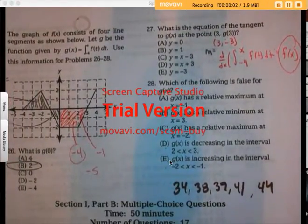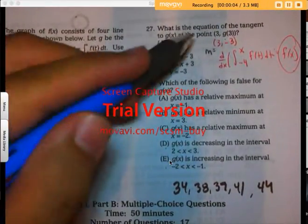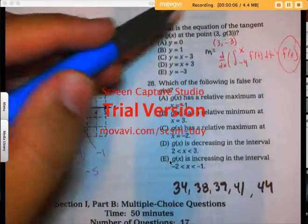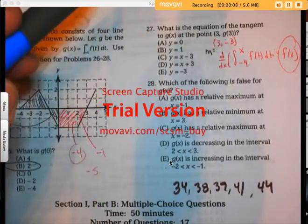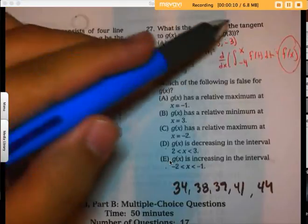Hi everyone, happy spring break. Number 27 wants us to find the equation of a tangent to g(x) at the point (3, g(3)). So what I need to do is find g(3).